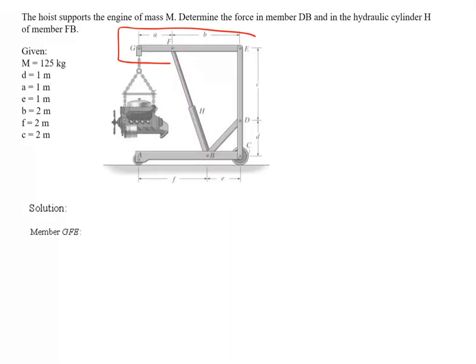So if I want to draw the free body diagram of this part only, so what I will have I will have a force acting downward which is 125 kg. I will have a joint here that's a force because that point E is pivoted and I know the force here which is the hydraulic force H.